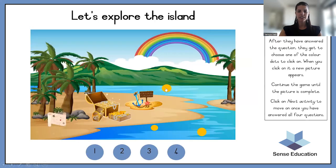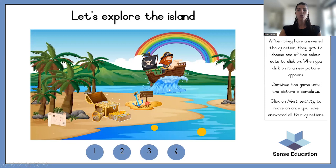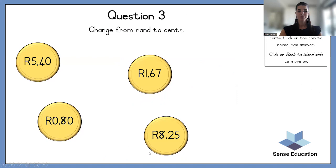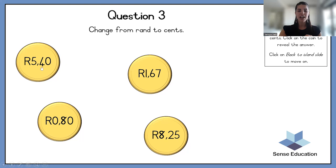Let's see what we're going to reveal now — it's a pirate on a ship! Now we need to change from rands to cents. The trick is: you move the comma two spaces to the right. So this comma is going to go one, two — and it's going to make 540 cents.